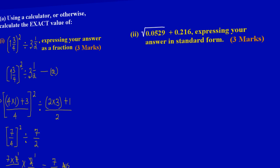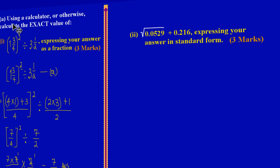Let's get into part 2 quick. In part 2 they have given to us the root of 0.0529 and we're adding 0.216 to that and they're asking us to express our answers in standard form. And that's another easy 3 marks.